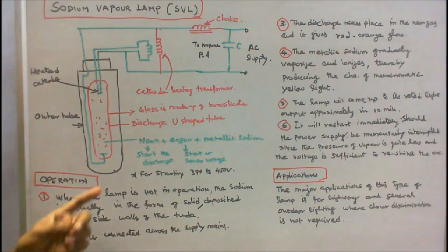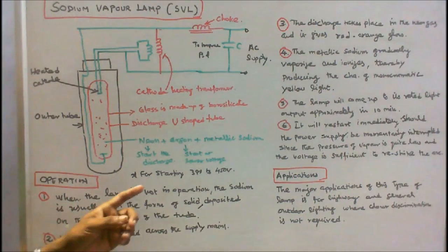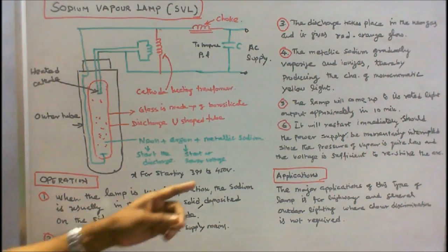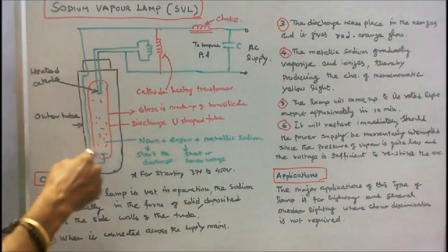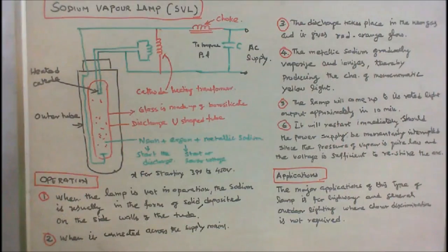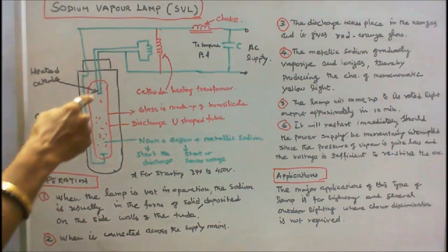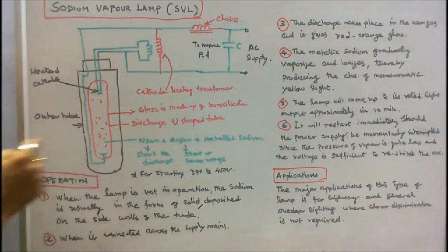Now we see the operation of the sodium vapor lamp. When the lamp is not in operation, the sodium is usually in the form of solid deposited on the side walls of the discharge tube. This is a discharge tube. The sodium is deposited on the walls of the discharge tube.